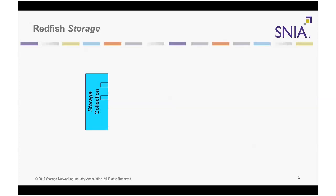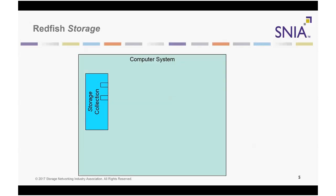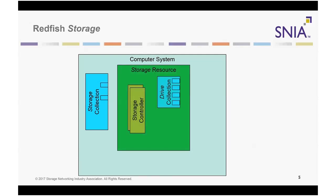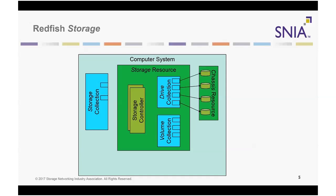The storage resource represents a storage subsystem of a computer system. The subsystem may be physical or virtual. Each storage resource associates a group of controllers with the devices attached to them and the volumes they provide. The storage resource may have redundancies specified through the redundancy property. Drives are physical resources that first appear when they are discovered in a chassis. Each drive resource describes the functional and physical characteristics of a disk drive. The storage controller resources are located through the storage controllers collection property of a storage resource.